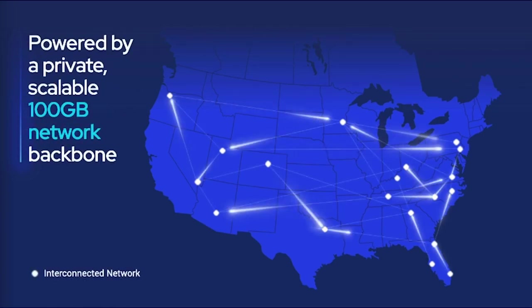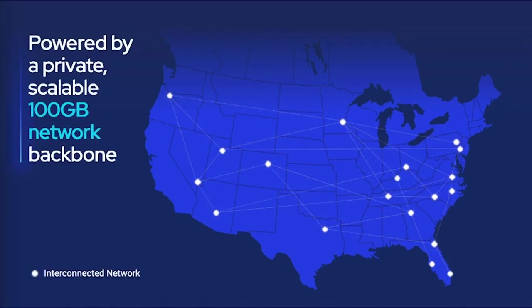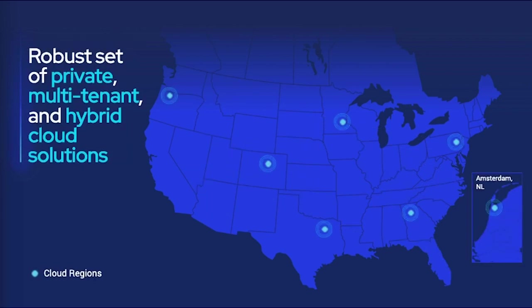We've got a scalable redundant private network backbone spanning the entire country, currently running at 100 gigabits per second scalable up to 400 gigabits per second, designed to accommodate large traffic spikes without sacrificing latency and performance for your applications. That range of connectivity options enables all of your networking requirements. We leverage that network to deliver cloud solutions — a robust set of cloud regions across the US providing multi-tenant, hybrid cloud, and single-tenant private cloud solutions.